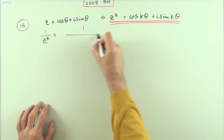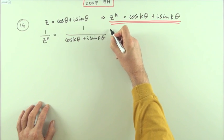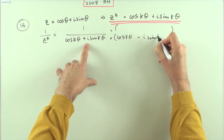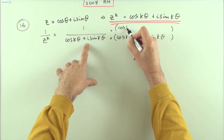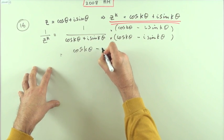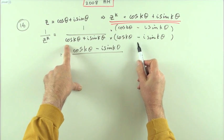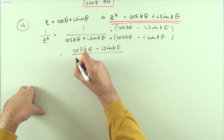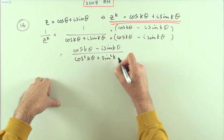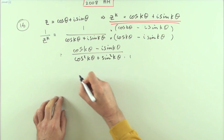Now show that the reciprocal 1 over z to the k equals the complex conjugate. So 1 over z to the k is 1 over cos(kθ) + i·sin(kθ). To resolve that, multiply the top and bottom by the complex conjugate: cos(kθ) - i·sin(kθ). The numerator becomes cos(kθ) - i·sin(kθ), and underneath, because of the i, you get the sum of two squares pattern: cos²(kθ) + sin²(kθ).